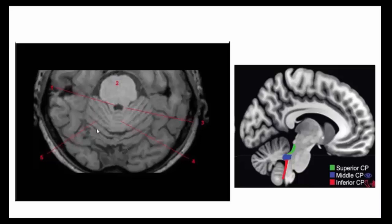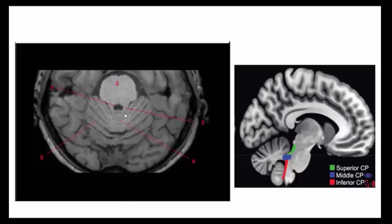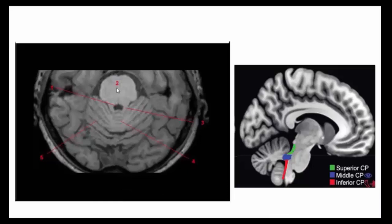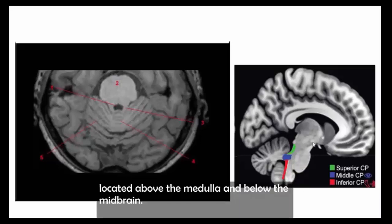The cerebellar hemispheres are two divisions of the cerebellum on either side of the vermis. This is the superior cerebellar peduncle on sagittal view. The superior cerebellar peduncles are paired structures of white matter that connect the cerebellum to the midbrain. The pons is the largest part of the brainstem, located above the medulla and below the midbrain.